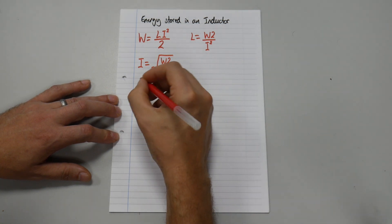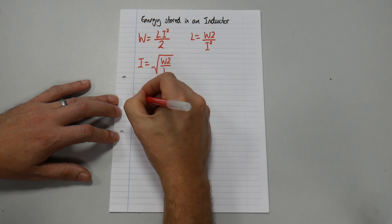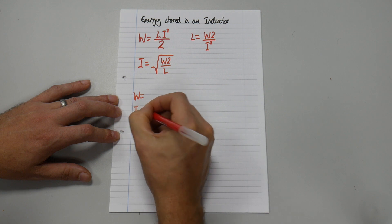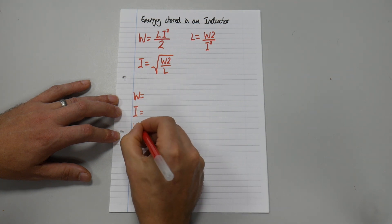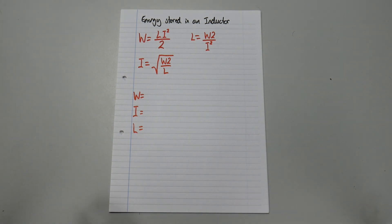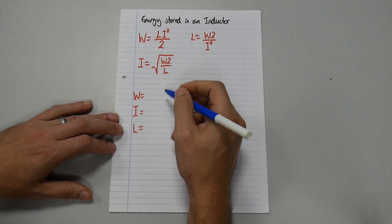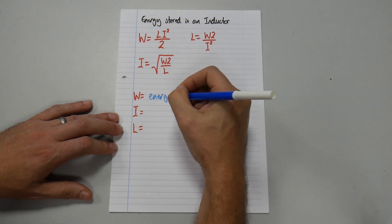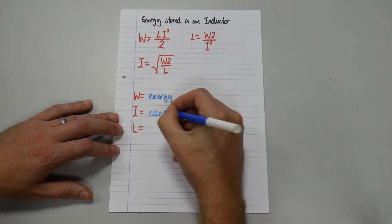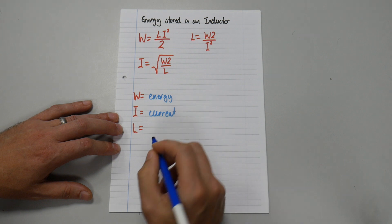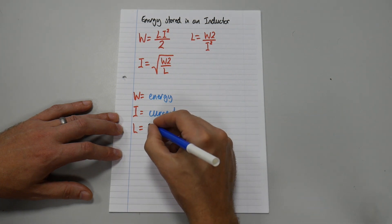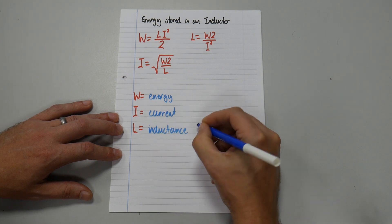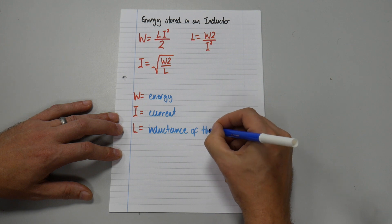Let's write down what each of our letters represent. So we have W equals, I equals, L equals. So W is energy, I is current and L is inductance of the coil.